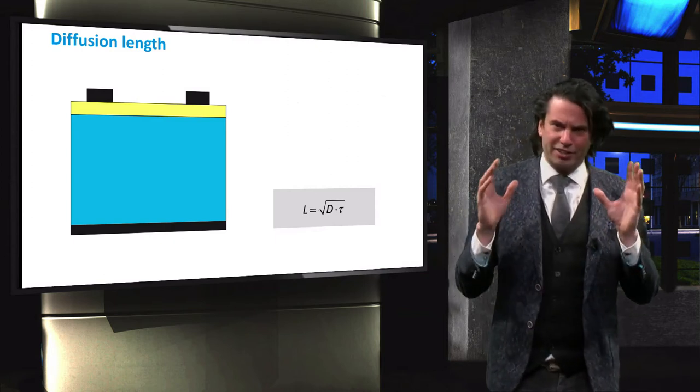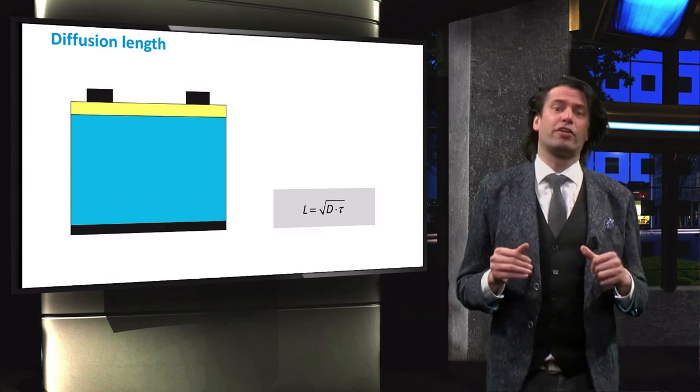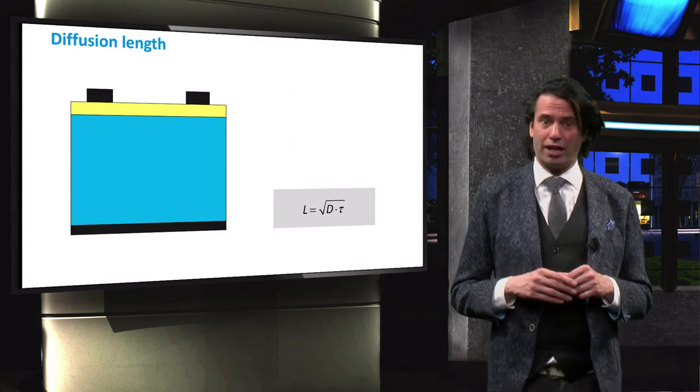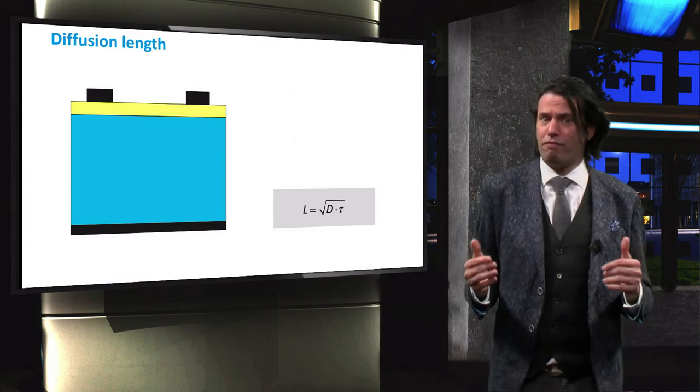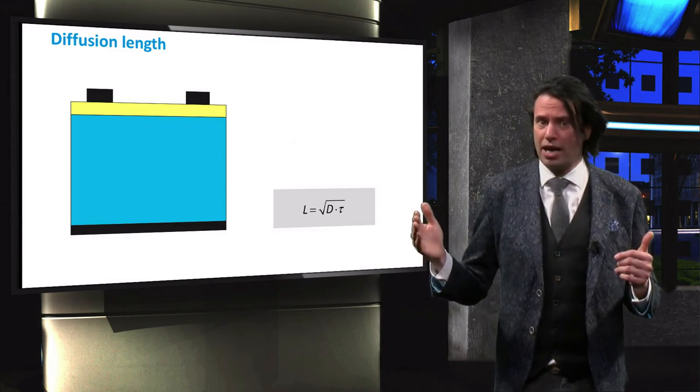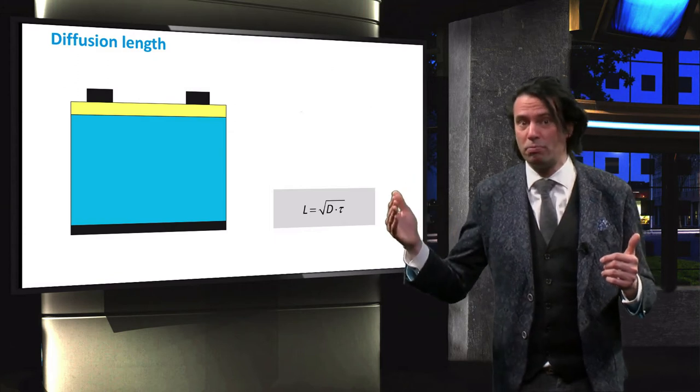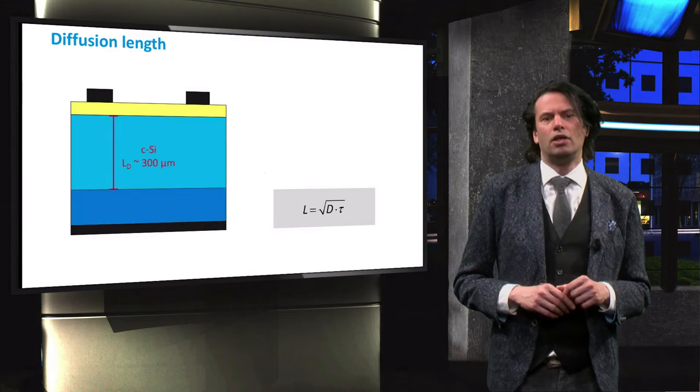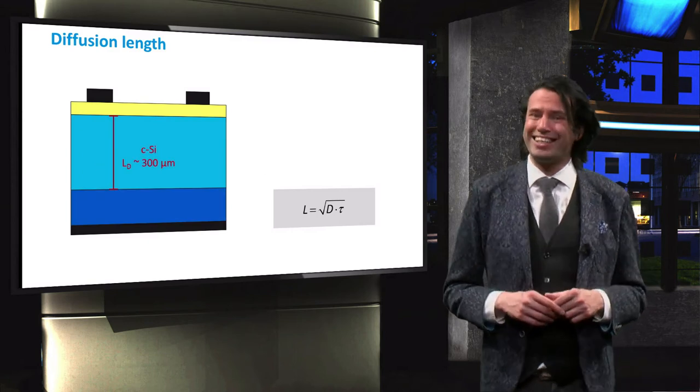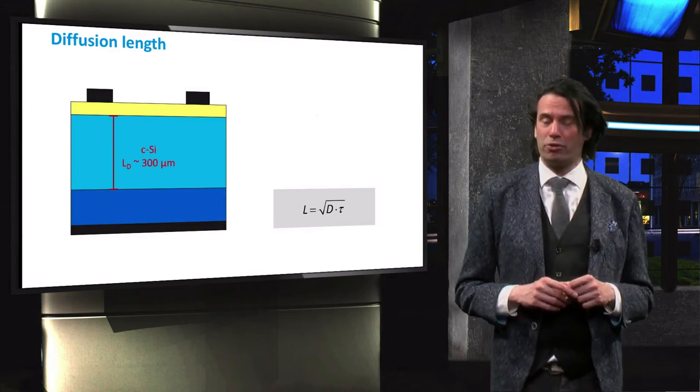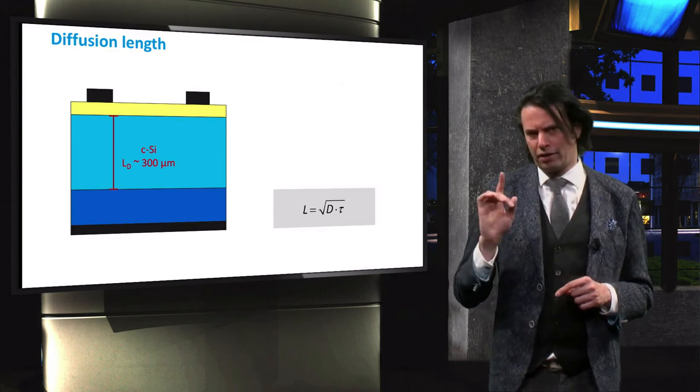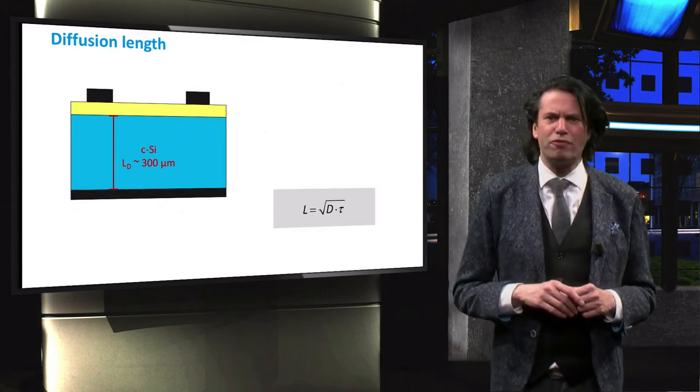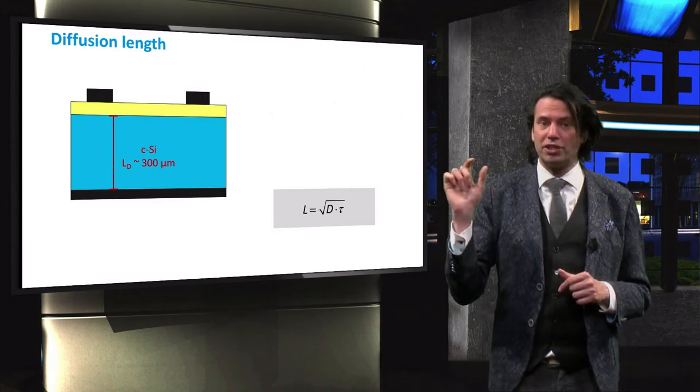It therefore does not make sense for the thickness of the absorber layer to exceed the diffusion length, since electrons farthest from the n-doped layer and holes farthest from the p-doped layer would no longer be collected. The diffusion length of crystalline silicon is about 300 micrometers. The thickness of a crystalline silicon absorber layer is therefore limited to about 300 micrometers.